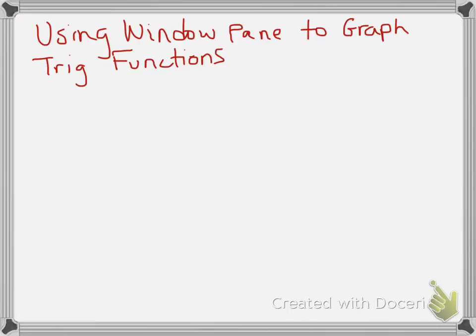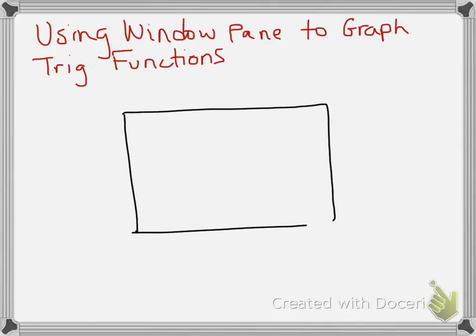So first off, let's start with the basic structure of a window pane. It's basically a rectangle split into four equal sections. So you split each direction in half.